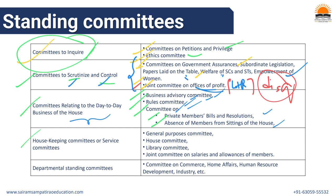Housekeeping or service committees include the General Purpose Committee, House Committee, Library Committee, and the Joint Committee on Salaries and Allowances of Members - which includes members of both Lok Sabha and Rajya Sabha. These committees take care of the general functioning of the parliament. Additionally, there are Departmental Standing Committees for each department separately - such as Committee on Commerce, Home Affairs, Human Resource Development, Industry, etc. Each department has its own special permanent standing committee.